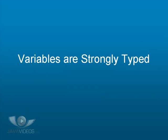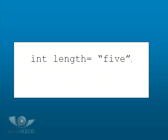Java is what's known as a strongly typed language. That means variables will only accept specific values of the type the variable has been defined as. For example, it is invalid to try and store a string into a variable declared as an integer.